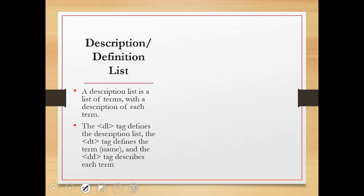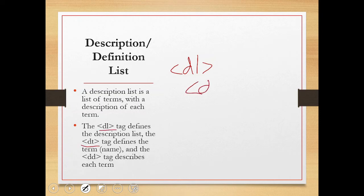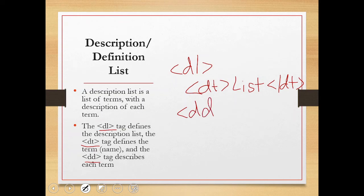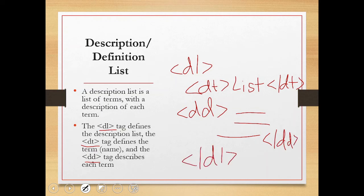A definition list has three tags. First is the dl tag, which defines the description list — similar to ul for unordered and ol for ordered. Then you have the dt tag for the definition term — the specific term you want to define. After the term, you add the dd tag for definition data — the actual description. You close the dd tag and finally close the dl tag. This is the pattern for how definitions are displayed on screen.